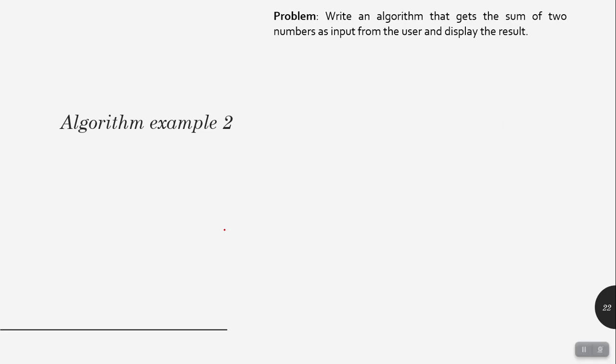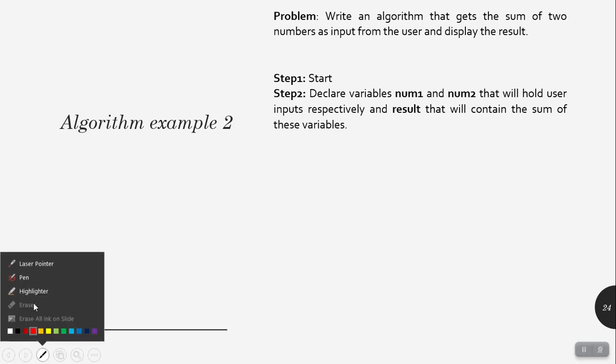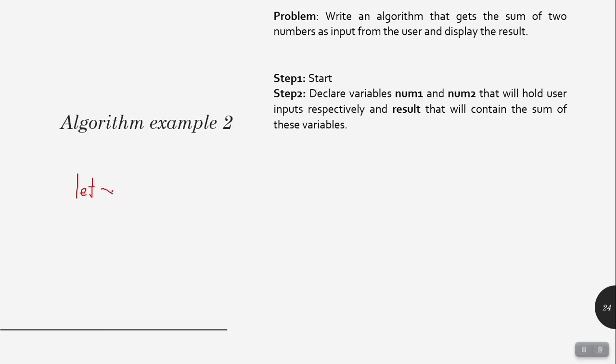For that, let's have our second example. The problem: write an algorithm that gets the sum of two numbers as input from the user and displays the result. Step 1: start. Step 2: declare variables num1 and num2 that will hold the user inputs respectively, and result that will contain the sum of these variables. In programming languages, we always declare variables that will hold the user input — variables are just containers of a value.